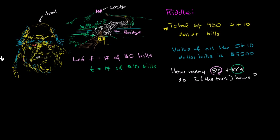Well, what's going to be our total of bills? It's going to be the number of fives that we have, which is f. The number of fives that we have is f. And then the number of tens that we have is t. The total number of fives plus the total number of tens, that's our total number of bills. So that's going to be equal to 900.